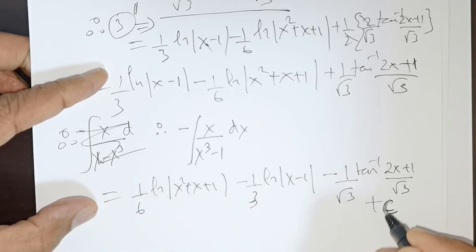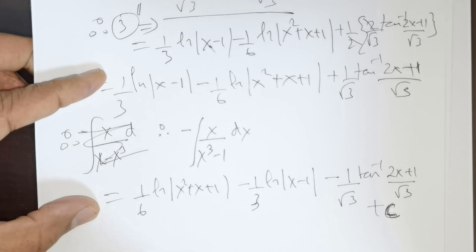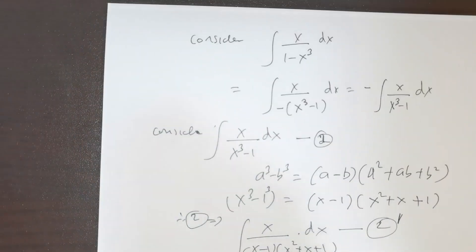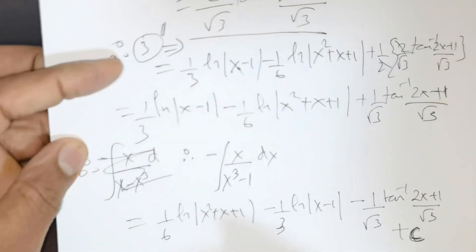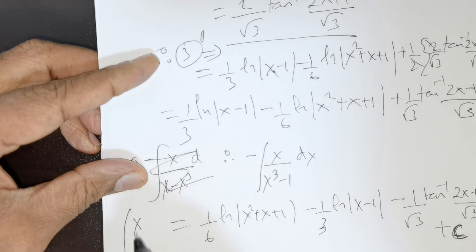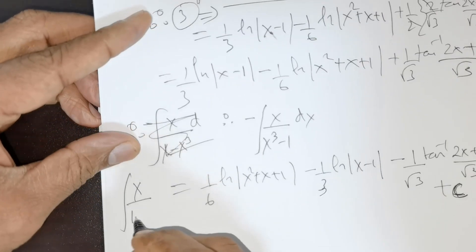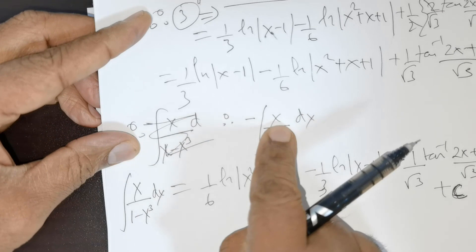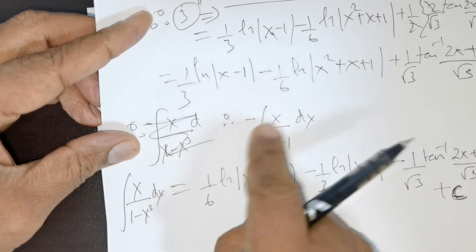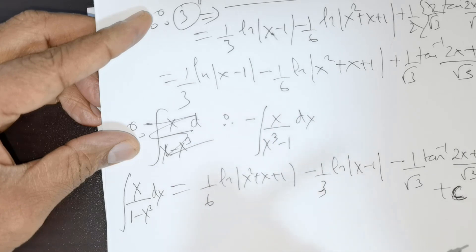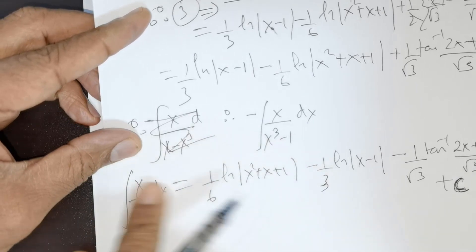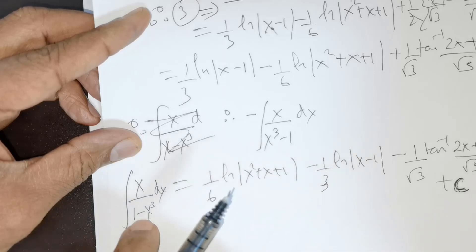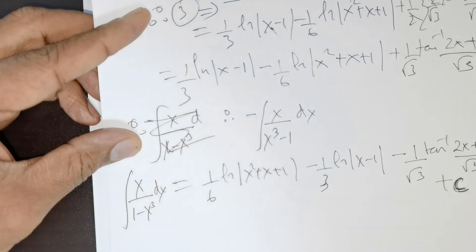This is the end of this particular question. We started with x/(1 minus x³) dx, rewrote it using linearity, and applied the difference of cubes formula a³ minus b³ to factor the denominator. That allowed us to use partial fractions and ultimately solve the integral. This is the solution for the original question.